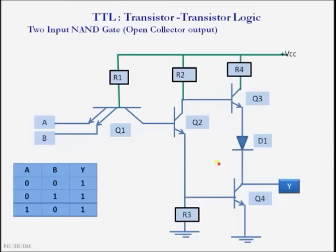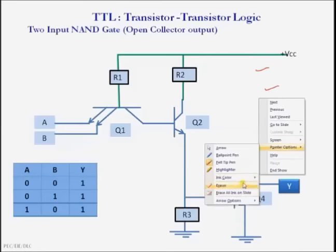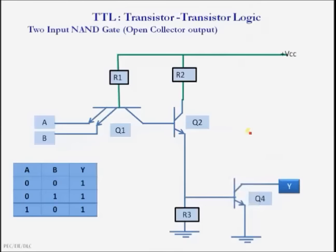When we remove transistor Q3 and resistor R4 from the totem pole configuration, we get the open collector output. This is the 2-input NAND gate with open collector configuration. In this configuration, the collector terminal is not connected to plus VCC, which is why it is called open collector output. For proper operation of this open collector configuration, we have to connect an external pull-up resistor to the collector terminal.